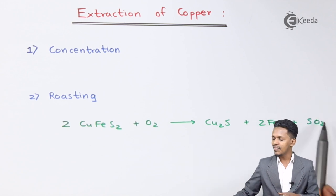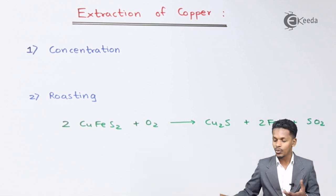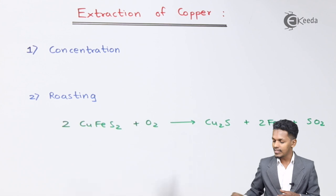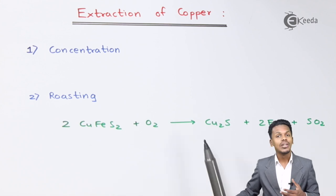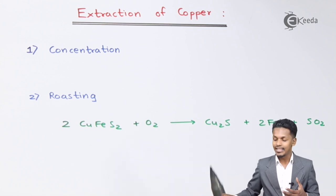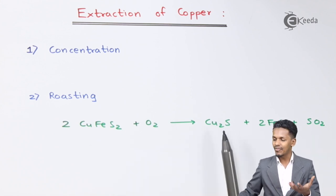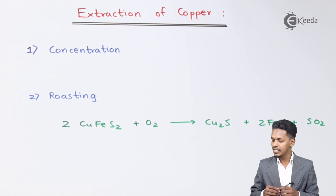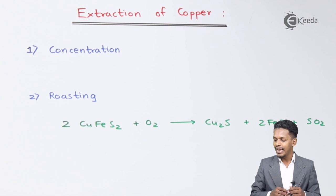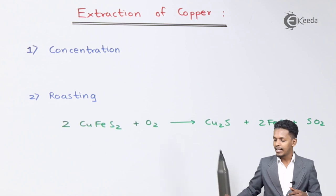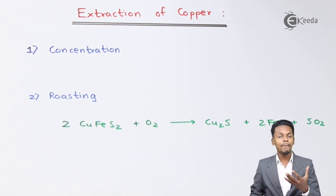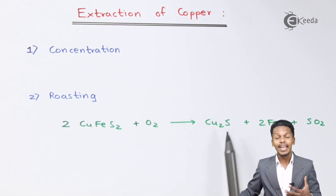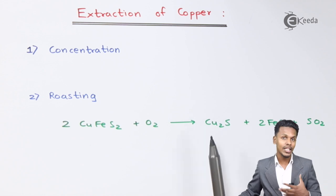SO2 is the waste product and is released as a gas. The two solid materials left are cuprous sulphide (Cu2S) and ferrous sulphide (FeS). Based on these two, we carry out further reactions to obtain copper.